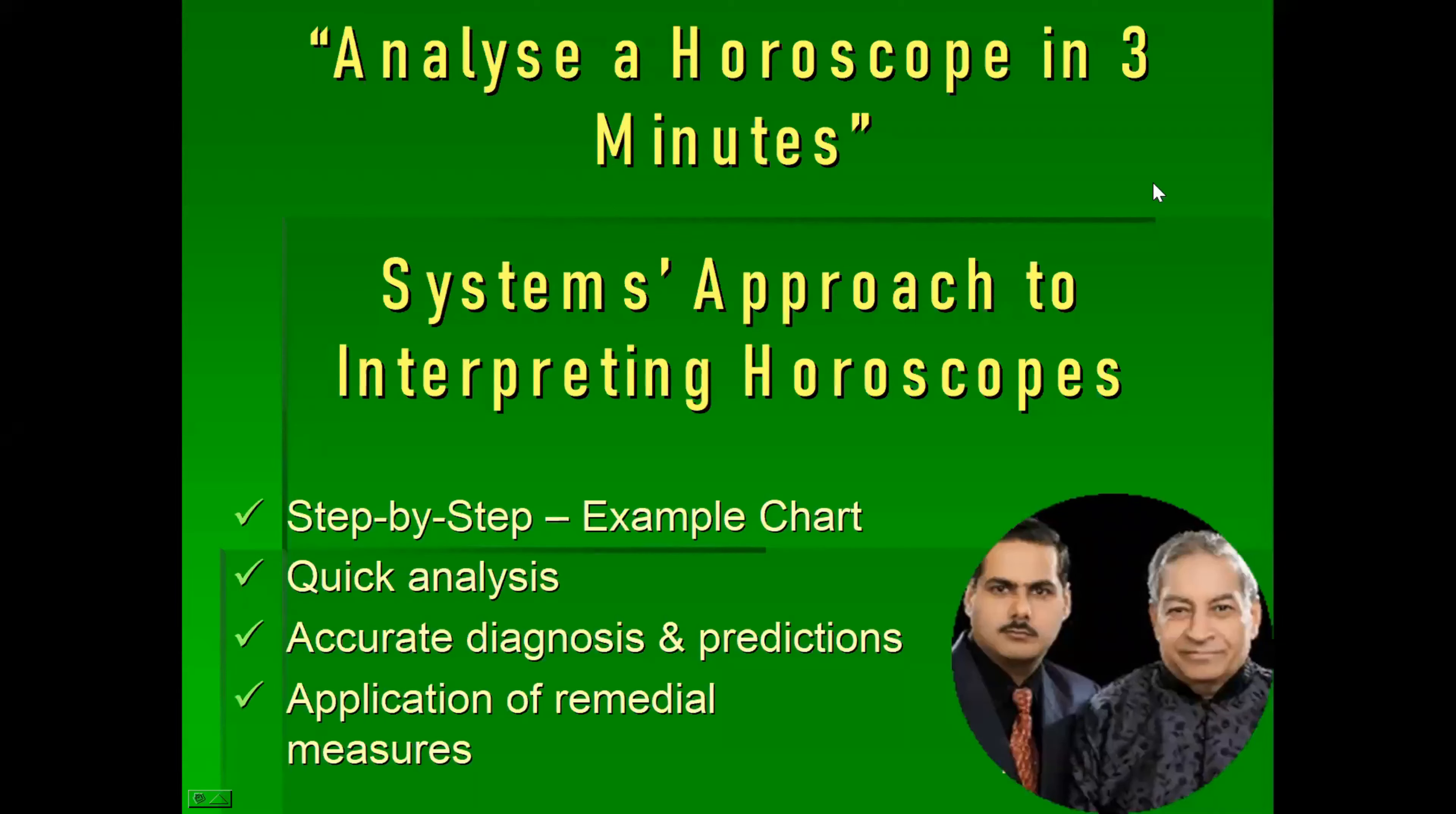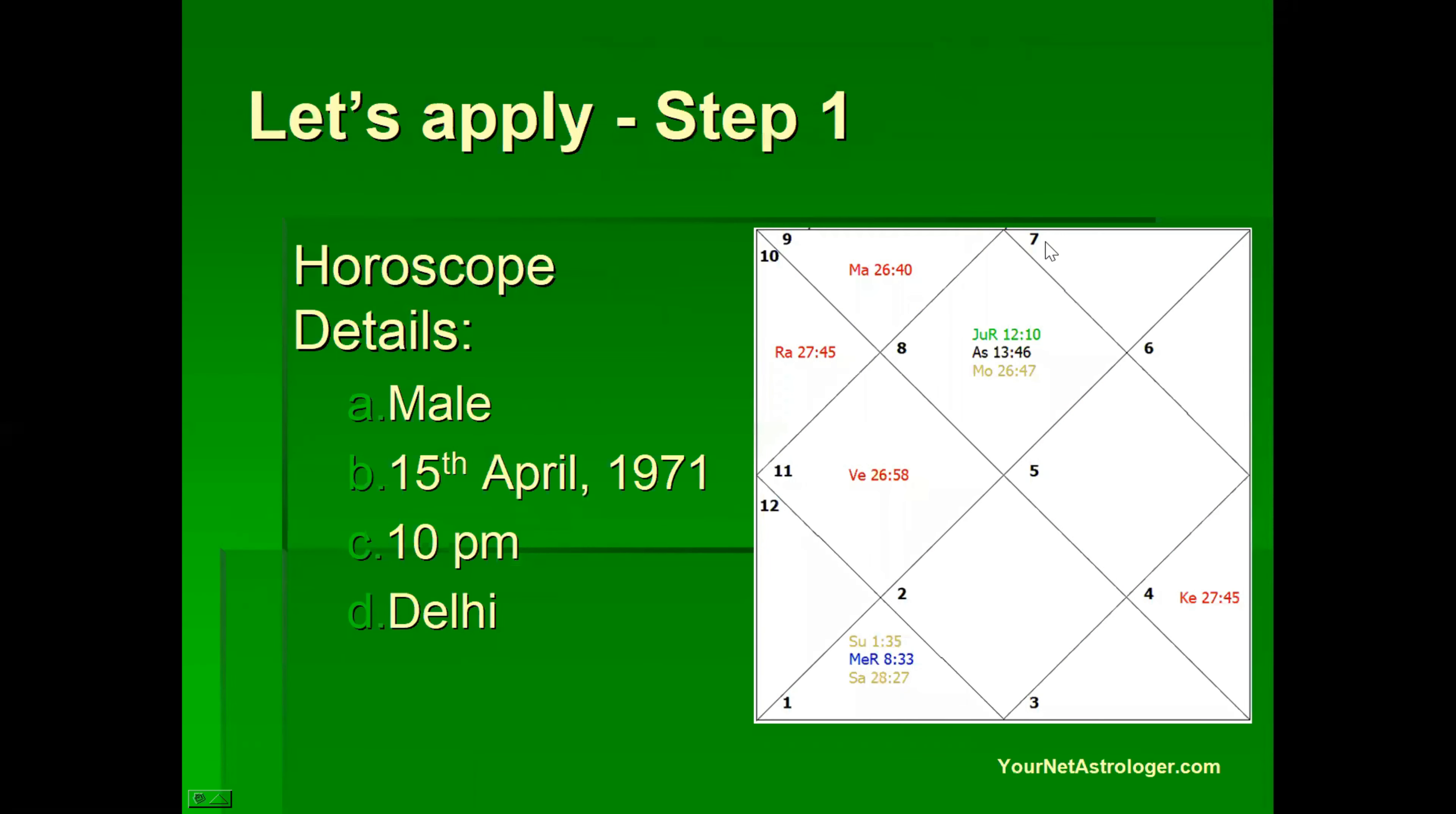In the previous video we learned how to analyze a horoscope in three minutes. Now we will apply those concepts in a step-by-step manner on a practical chart. Let's start. So in step one we prepared the horoscope with the help of suitable software. It can be Jyotish Tools which is a very good software for systems approach astrologers. We fill in the details and the chart comes up like this.